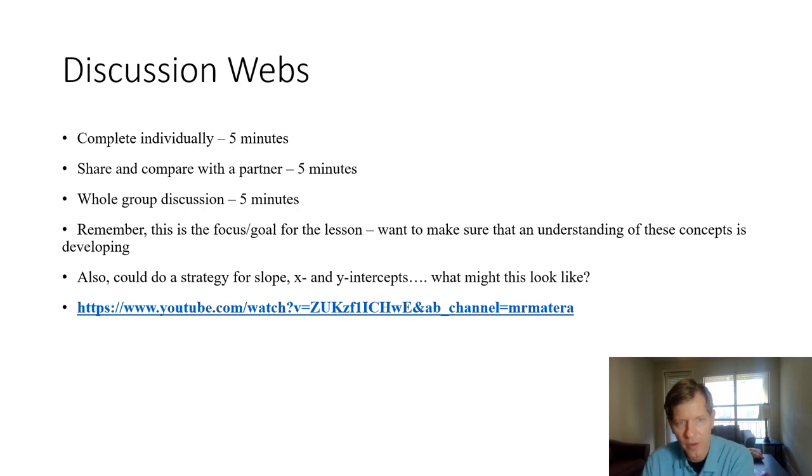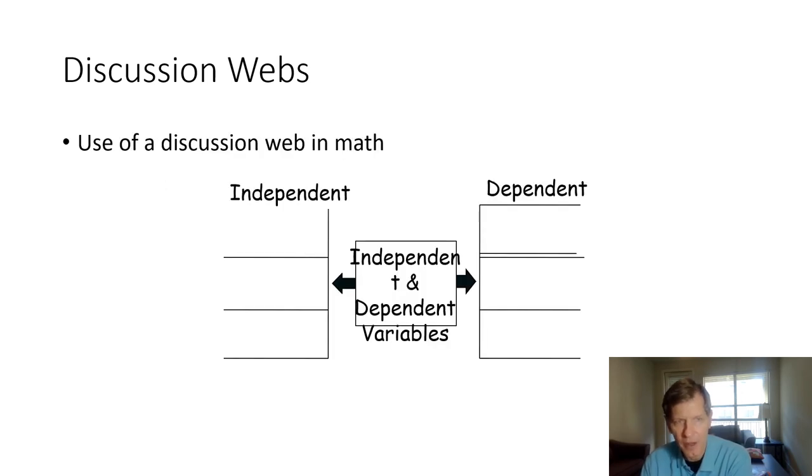You can have students complete discussion webs together, where they will take about five minutes to complete a discussion web together. They will share and compare the results with a partner, then engage in whole-group discussion. This can lead to a focused, goal-based discussion as a class about how to interpret graphs or how to interpret scientific and mathematic concepts such as slope. You see one example of a discussion web where students might use this to help them understand independent and dependent variables in mathematics.